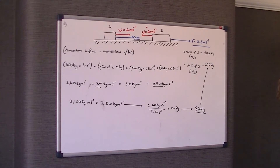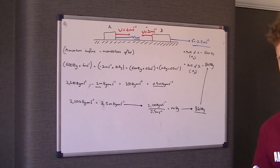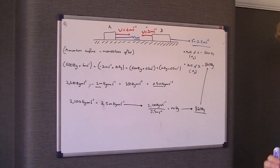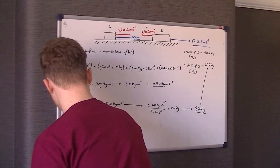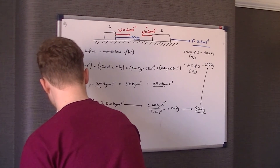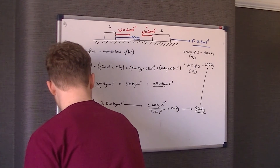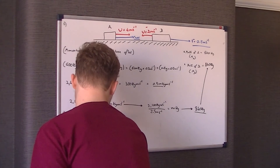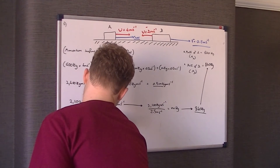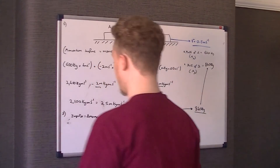Part B says: find the magnitude of the impulse exerted on A in the collision. So obviously we know that impulse is a change in momentum — that's the first thing I would state. For part B, state that impulse equals delta momentum. It just shows the examiner that you know what you're doing.